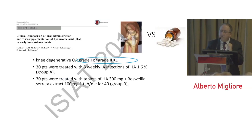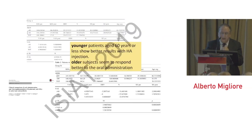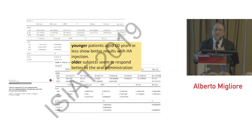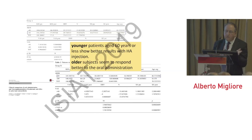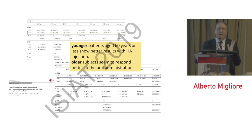Studies comparing intra-articular injection versus oral administration of hyaluronic acid in early OA at Kellgren-Lawrence grade 1 found a difference in age response: younger patients aged 60 years or less showed better results with hyaluronic acid injection, while older subjects responded better to oral SYSADOA administration. This is very important information, though it does not mean we should not treat patients over 60 with hyaluronic acid — we have to use all tools in the global management of arthritis.